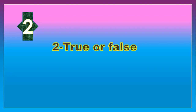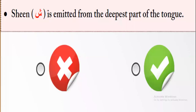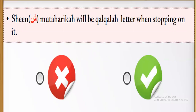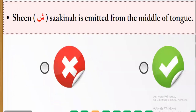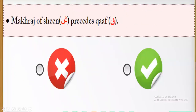Number two: true or false. Statement one — Sheen is emitted from the deepest part of the tongue. Right or wrong? Wrong — it's the middle part of the tongue, not the deepest. Statement two — Sheen mutaharika will be a qalqala letter when stopping on it. Right or wrong? Wrong — no qalqala for Sheen. Statement three — Sheen sakinah is emitted from the middle of the tongue. Right — the middle. Statement four — makhraj of Sheen precedes qaf. Wrong — qaf precedes Sheen.